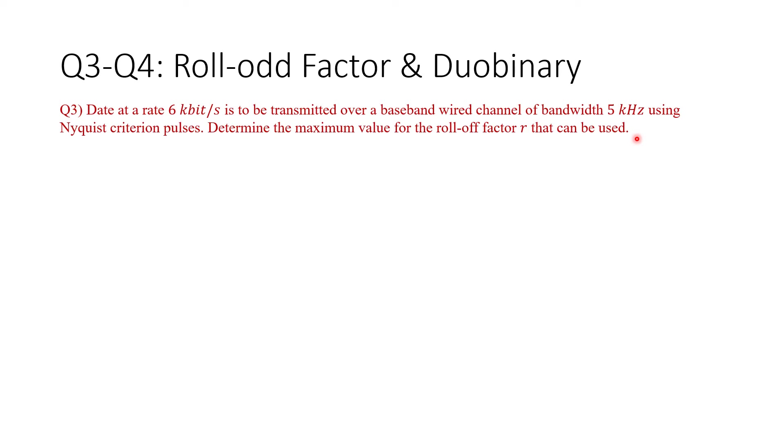Next I'm going to show you the answer. The answer to this question is as follows. Here is the formula that we need to use. By direct substitution for the bandwidth and the rate, we can find small r which turns out to be two thirds.